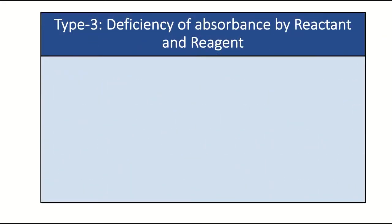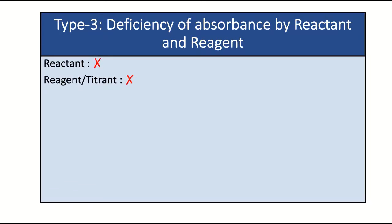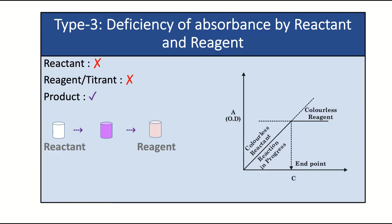Type 3 is the deficiency of absorbance by reactant and reagent. The reactant does not absorb, the reagent also does not absorb, but the product formed shows the absorbance characteristics. Initially the absorbance is zero as the reactant is colorless. As reagent is added, the product formed shows increasing absorbance, so the graph rises until the endpoint. After the endpoint, since the reagent shows no absorbance, the graph shows a straight line.